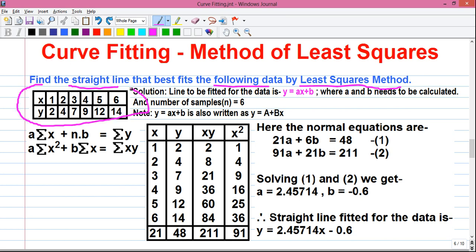This is our given data set where some values of x and corresponding values of y are given. So let's proceed to the solution. The line to be fitted for the data is y = ax + b, because it's given in the question, the line will be a straight line and we know the equation of the straight line is y = ax + b where a and b are the constants that need to be calculated. And the number of samples, or small n, equals 6.